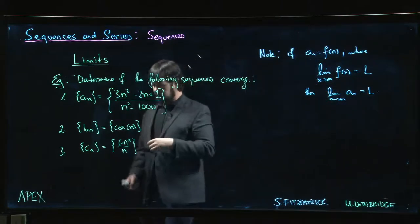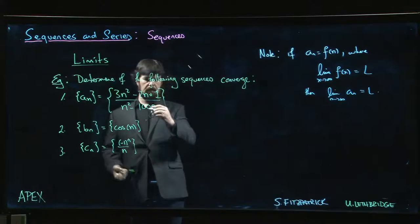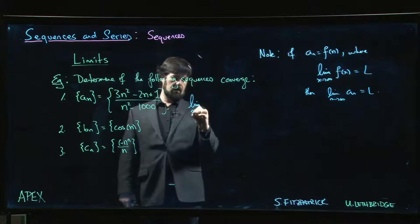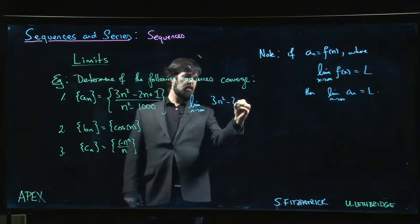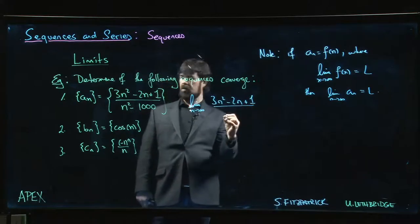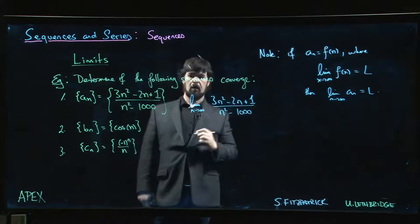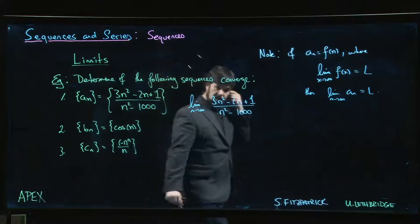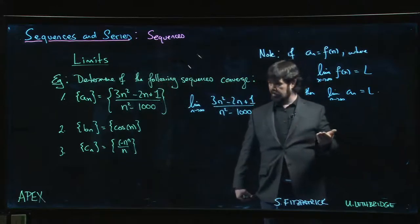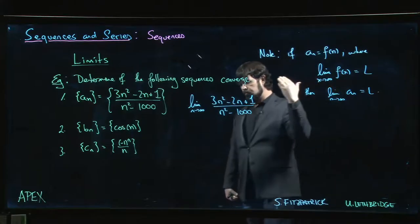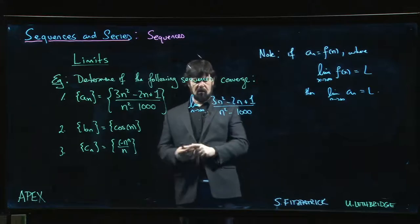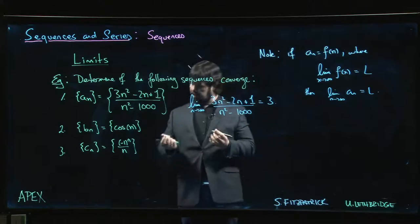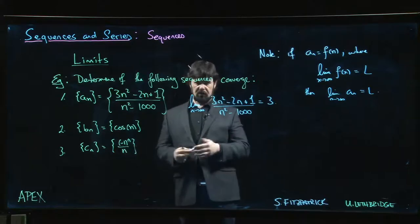We know how to do a limit like this. If we were doing the limit as n goes to infinity of (3n² - 2n + 1)/(n² - 1000), if we had x instead of n here, this is a problem from way back in the very first chapter on limits, the very beginning of calc 1. It's quadratic top and bottom. If the degree is the same, we look at the ratio of the coefficients, 3 over 1. We know that limit is 3, so it converges to 3.